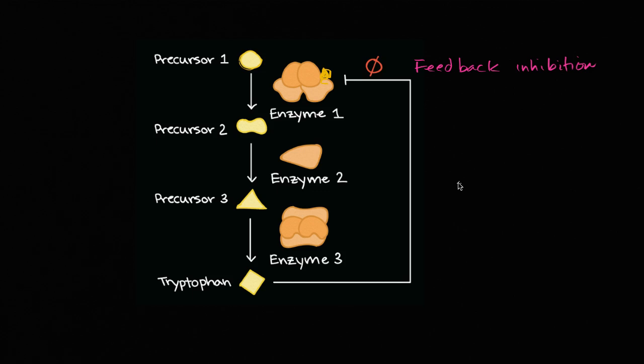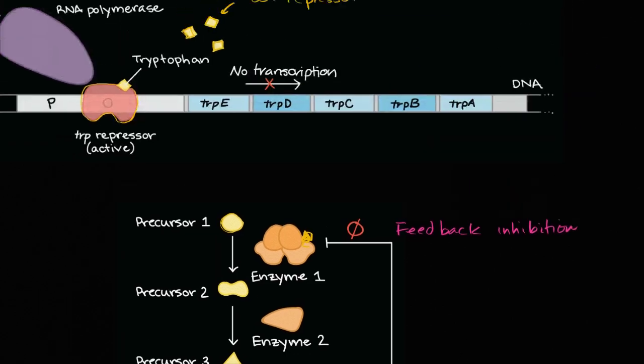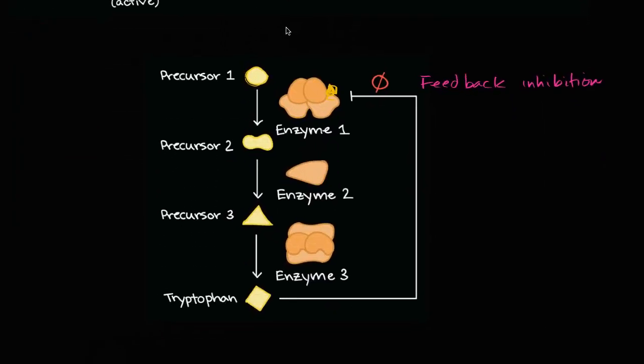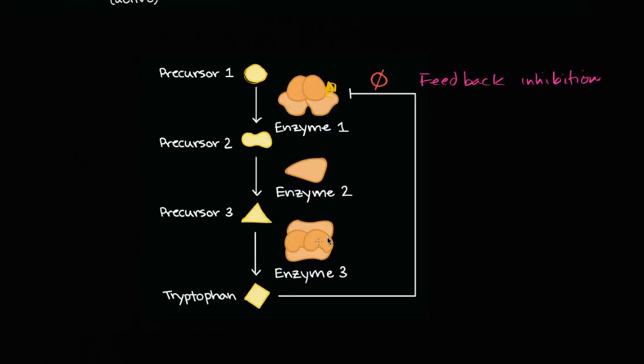But the ones that are most typically talked about are what we just talked about here, where you have your tryptophan acts as the co-repressor of the trp repressor, and also the feedback inhibition, which once again is not really about gene regulation, but you can see how the product of this process can go back and inhibit one of the first enzymes.